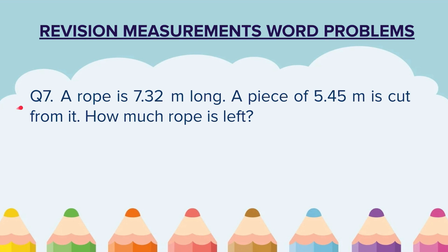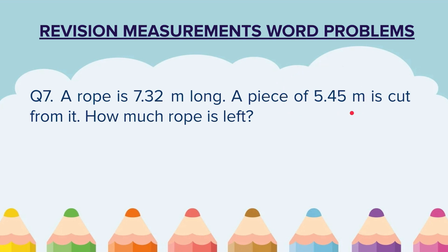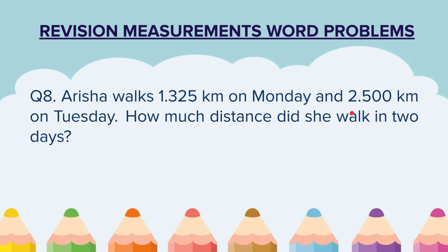Question 7. A rope is 7.32 m long. A piece of 5.45 m is cut from it. How much rope is left? They have told us the length of the rope and the piece that was cut, and we have to find out what is left.